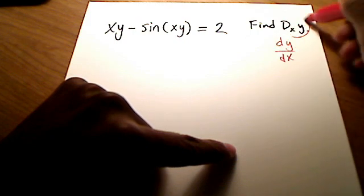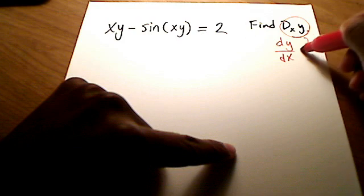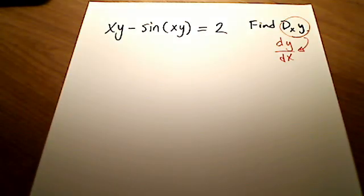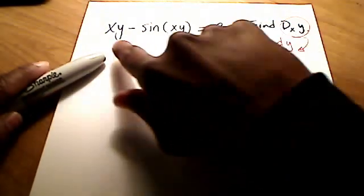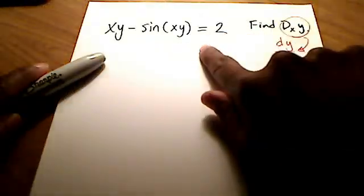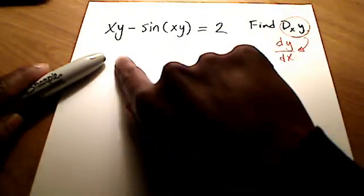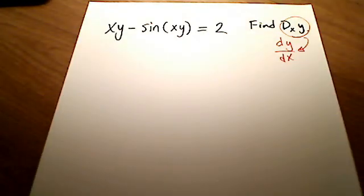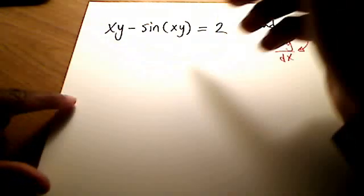This notation simply means: can you find dy/dx? This is not set up in your typical function form, where we have y equals some stuff, or f of x equals some stuff with everything else on the other side. So we need to use a rule called implicit differentiation.